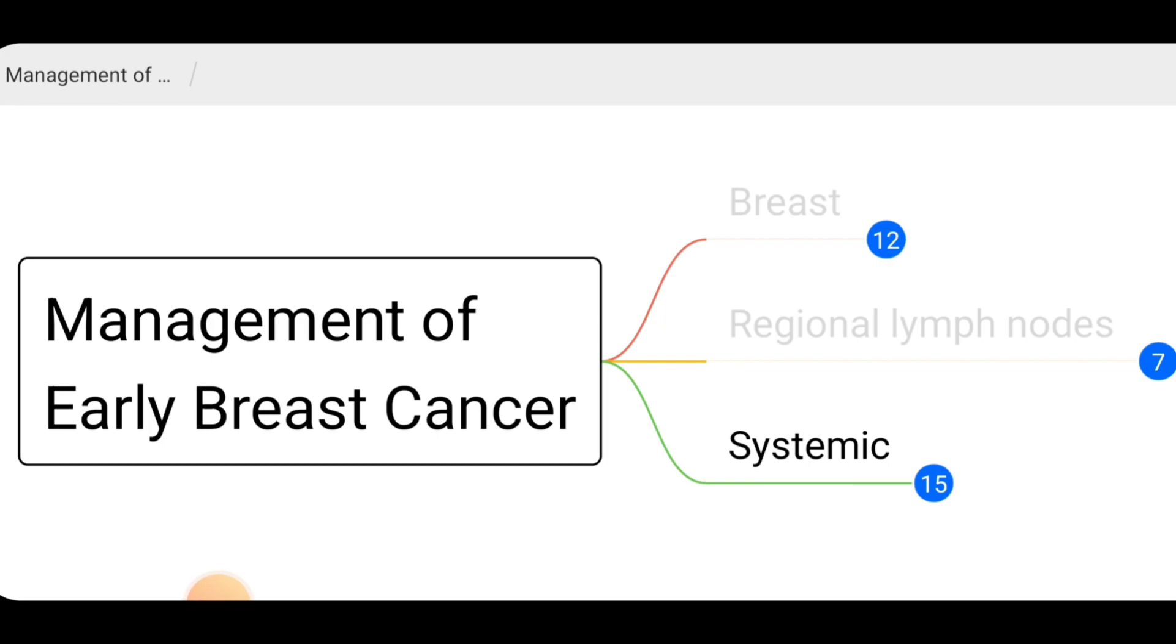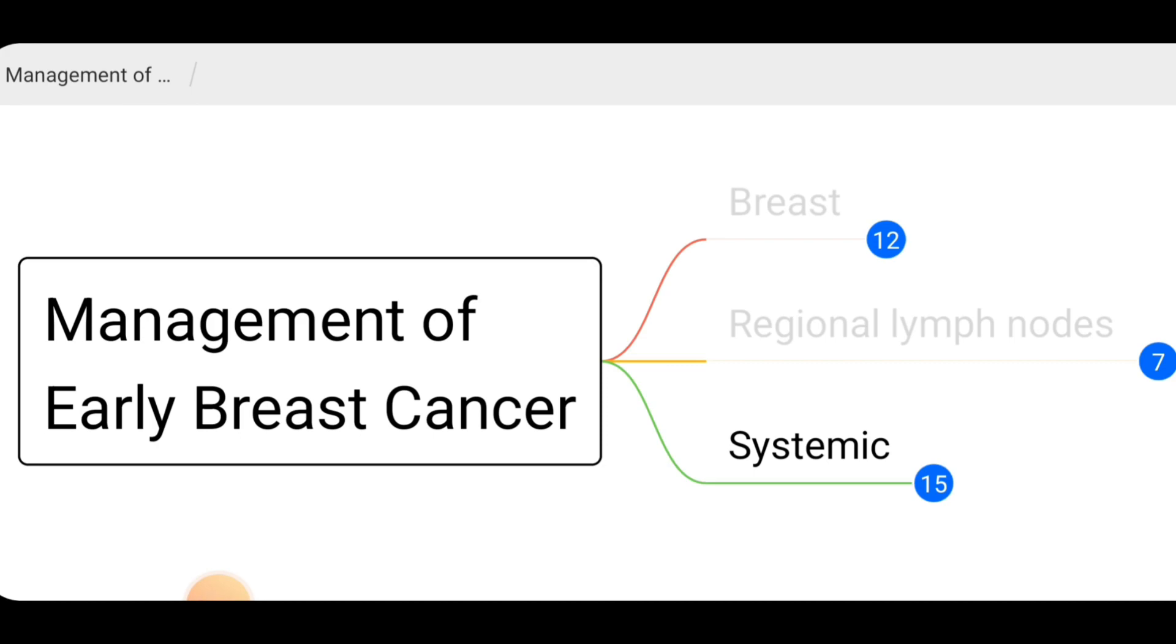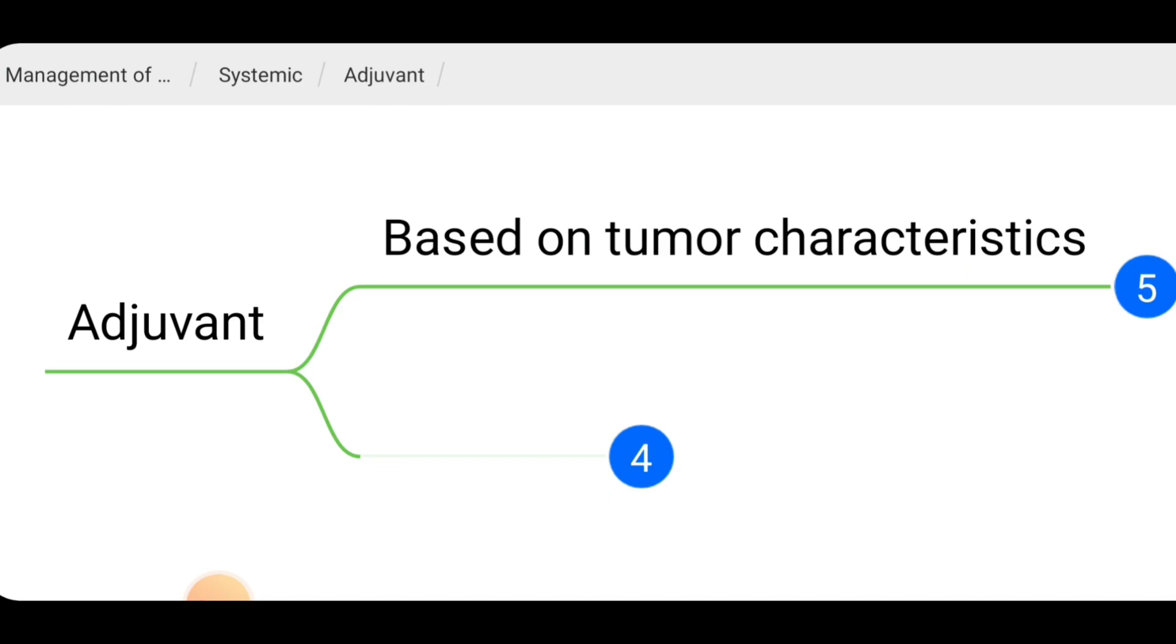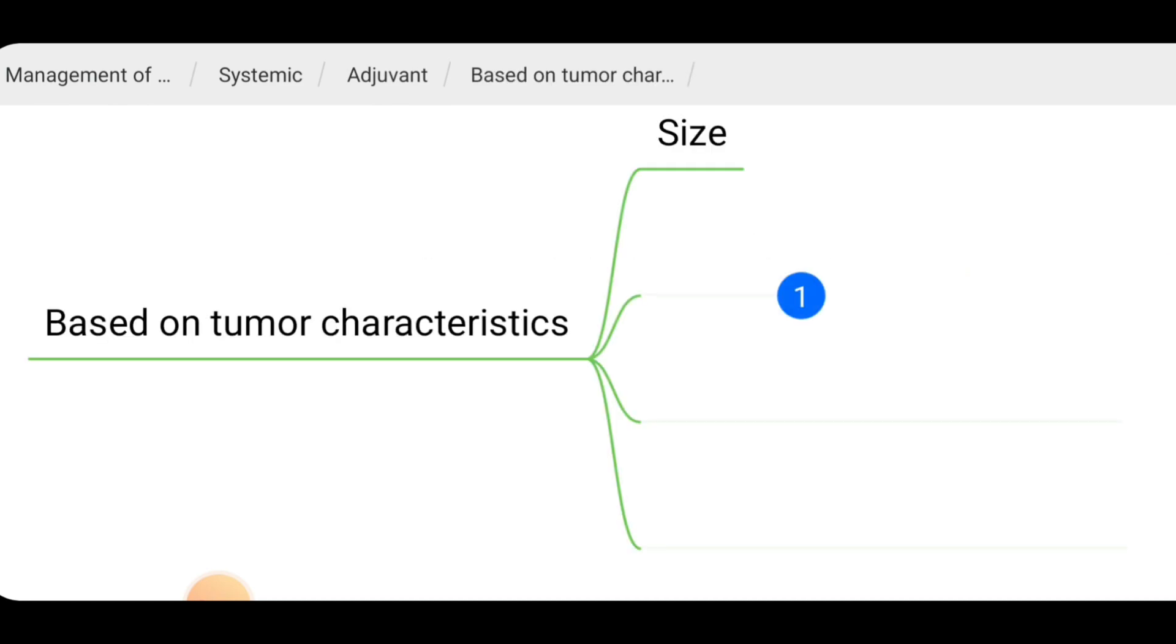Lastly, let's talk about systemic management for early breast cancer. Adjuvant and neoadjuvant therapies are the primary methods of systemic management. The choice of adjuvant therapy is based on the tumor characteristics, including the size and the grade.